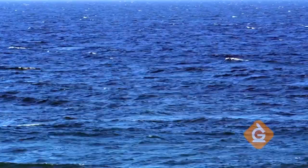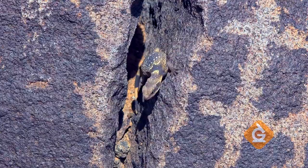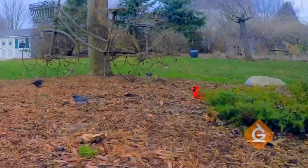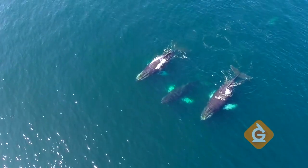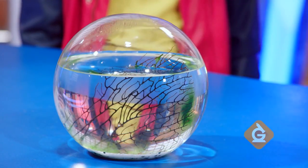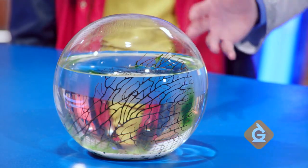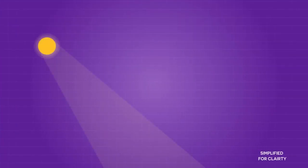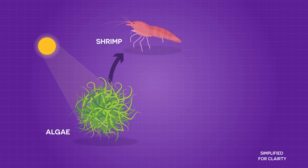In an ecosystem, each organism has its own role to play. And it can be as small as your backyard or as big as the ocean. Let's look at our sealed ecosphere as an example. In our ecosphere, light energy helps the algae grow. The algae is then eaten by the shrimp.